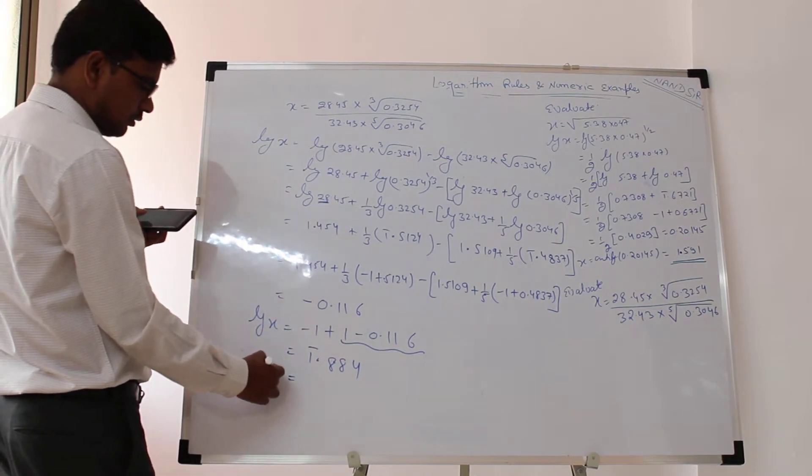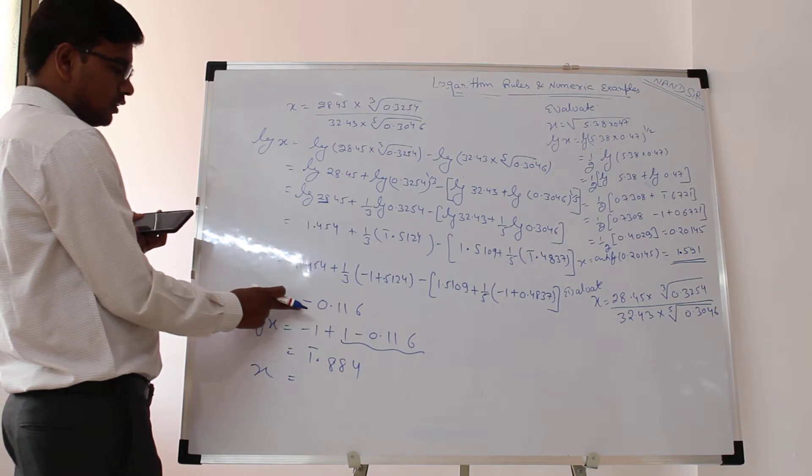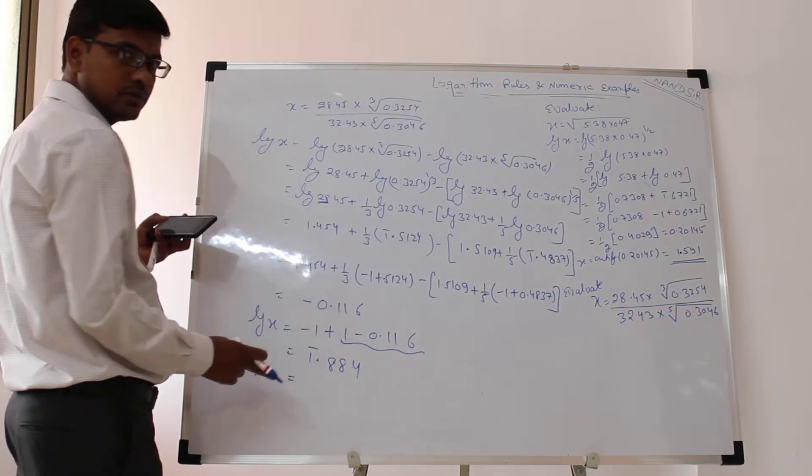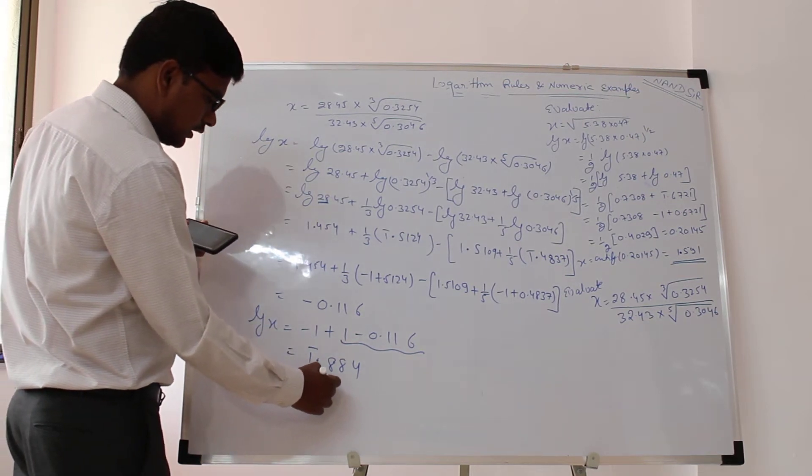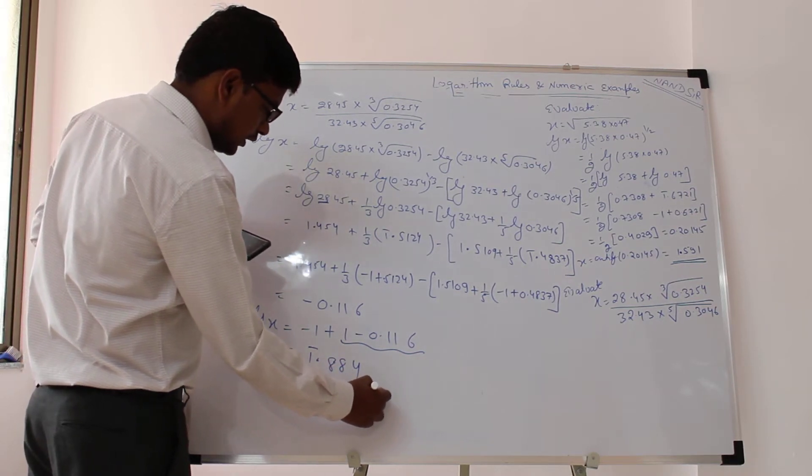So now x will be—you cannot use the anti-logarithm for negative numbers, so we need to add minus 1 and plus 1 first. So x will be anti-log of 1 bar point 884.